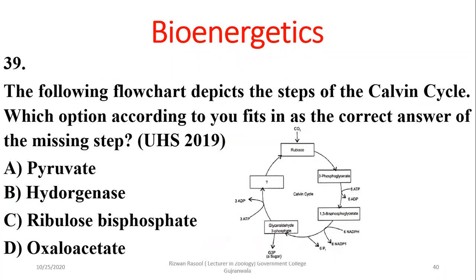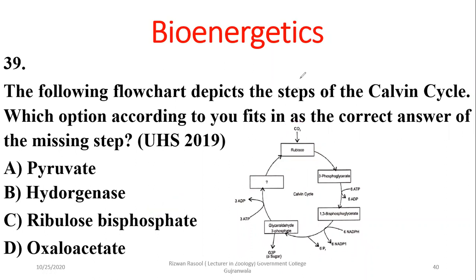Question 40: The flow chart depicts steps of the Calvin cycle. The missing step involves rubisco fixing CO2, with the substrate for rubisco being ribulose bisphosphate (RuBP). The right option is Charlie.